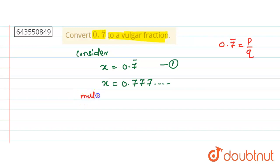So what I get, this becomes 10x. This is equal to 10 into 0.777 and so on. So this is equal to 10x equals, so one decimal shifted, so 7.777 and so on.